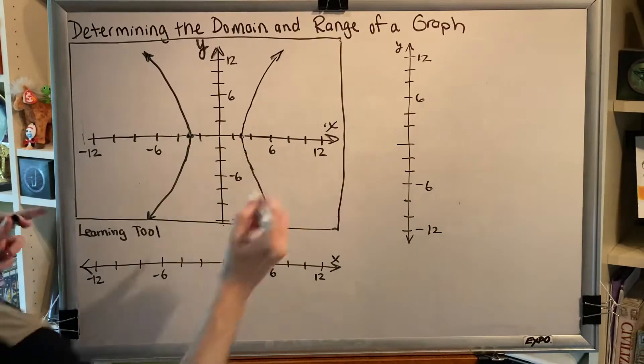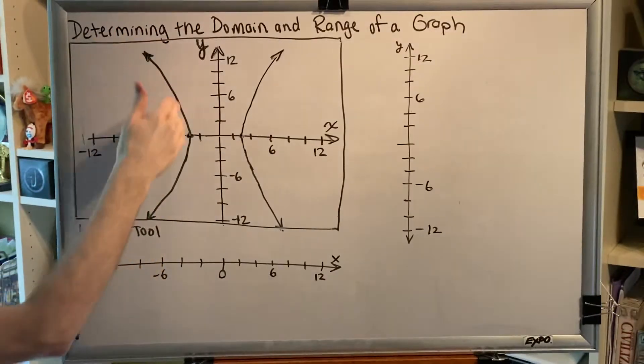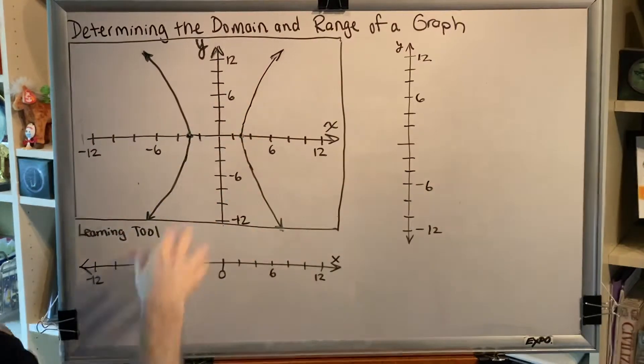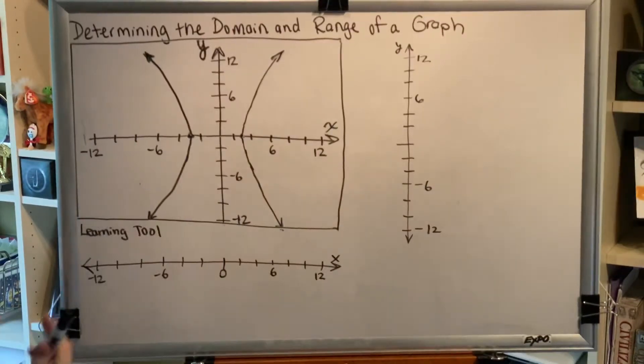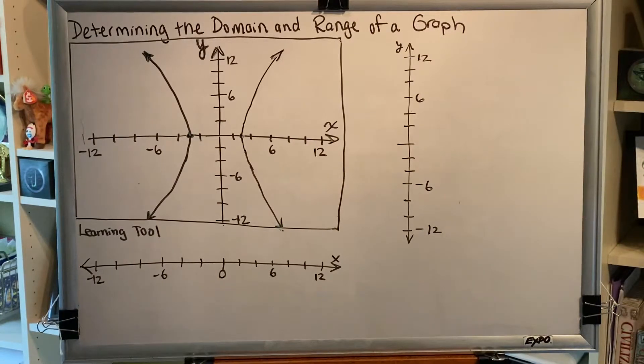Alright, so we have a graph here. This graph has a curvy piece over to the left and a curvy piece over to the right, and there's sort of a gap in the middle. They're not touching one another, and our job is to find the domain and the range of this graph.